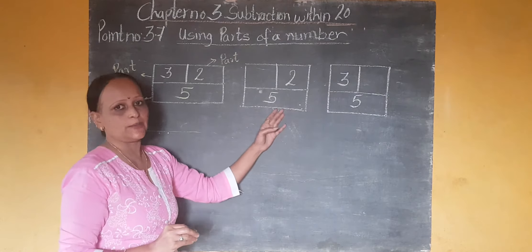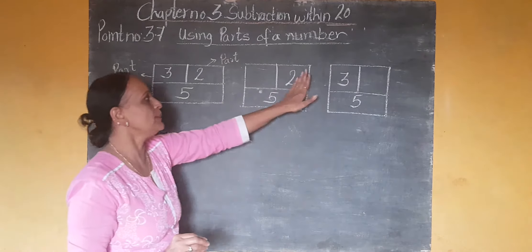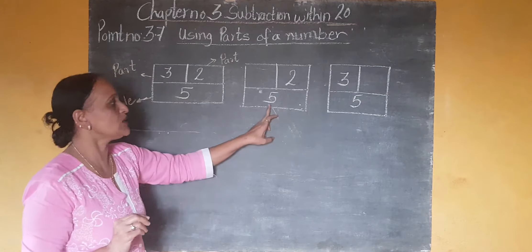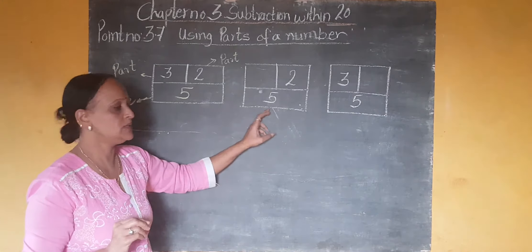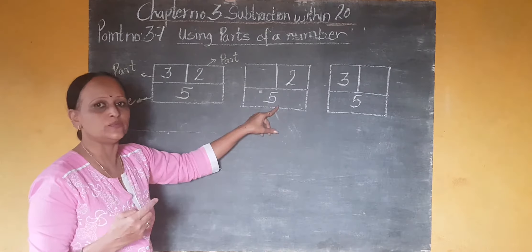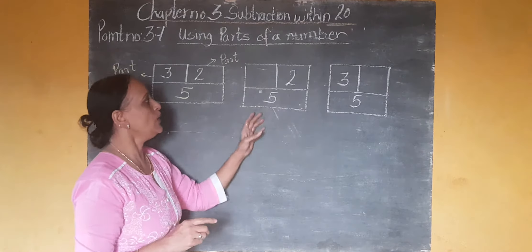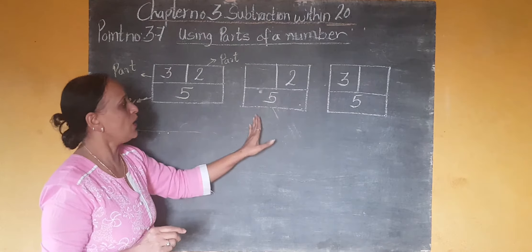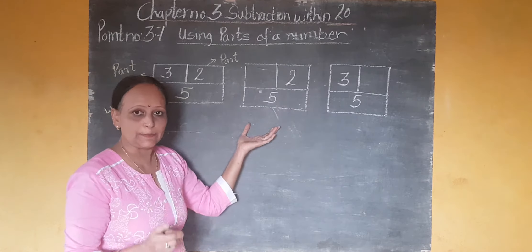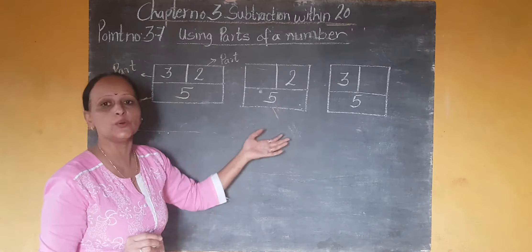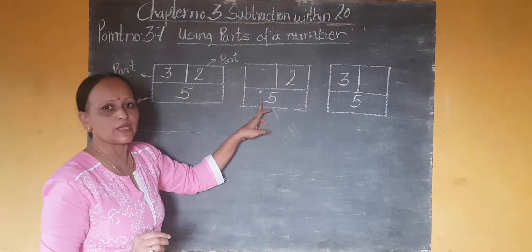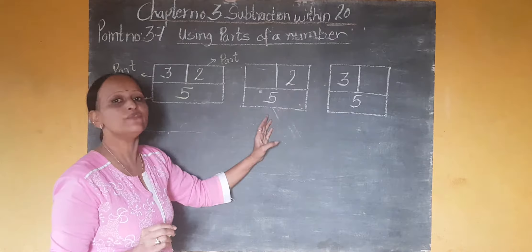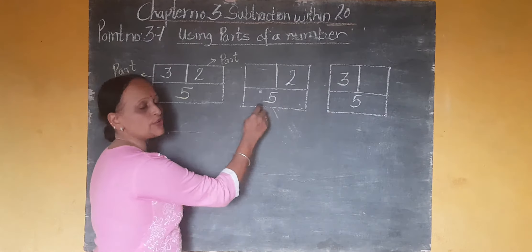Now in this part, one part is missing and one part is given. Which number is given in one part? 2 is given. And what is the whole? The whole is 5. So how will you find the blank part? You have to do subtraction. Which is the big number? 5. And the small number? 2. You have to subtract 2 from 5.